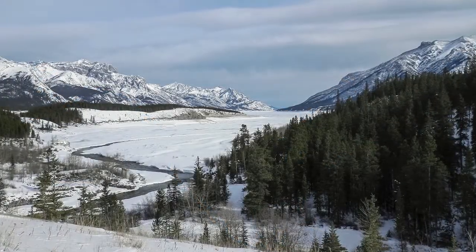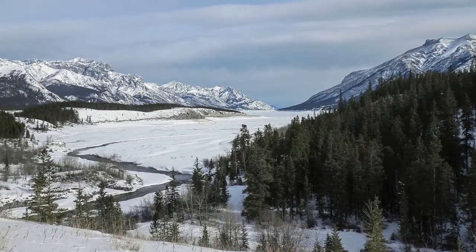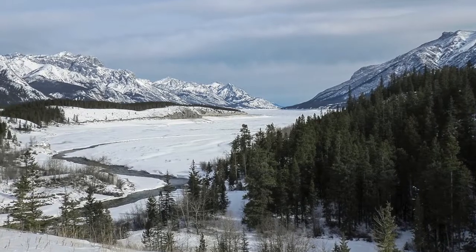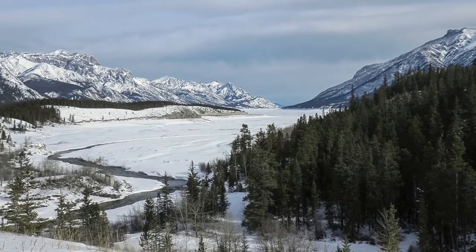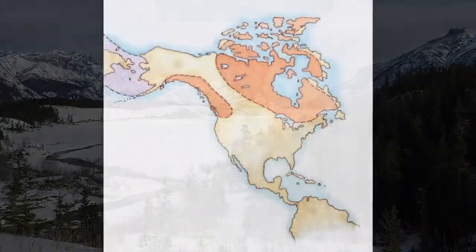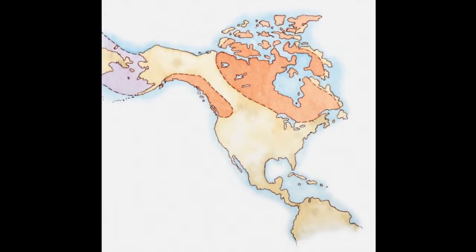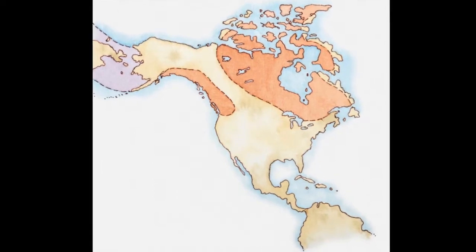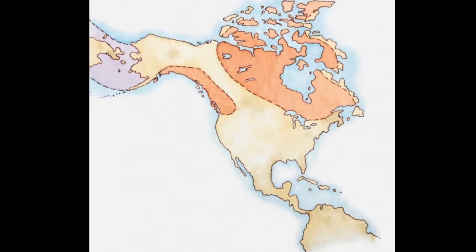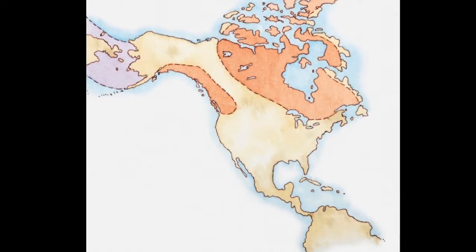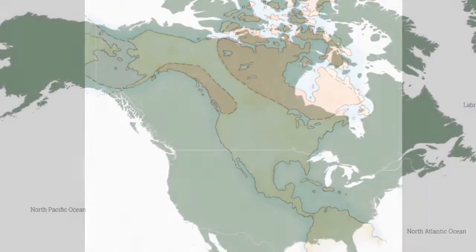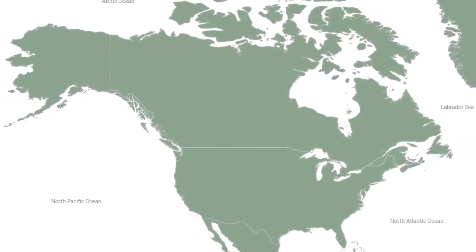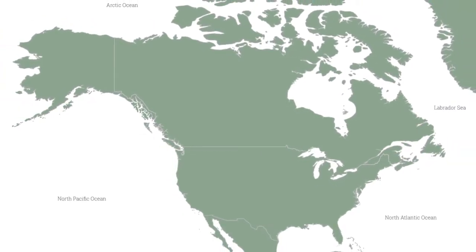Exactly how and when was North America populated by humans? The debate rages on. The prevalent migration models outline different time frames for the Asian migration from the Bering Straits and subsequent dispersal of the founding population throughout the continent.